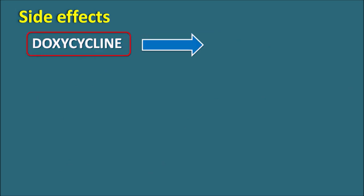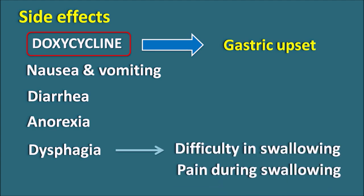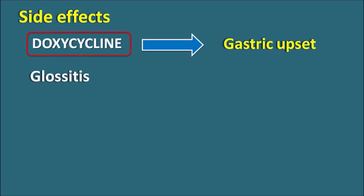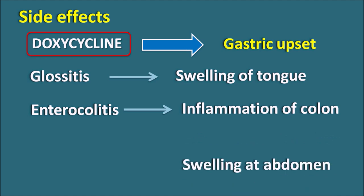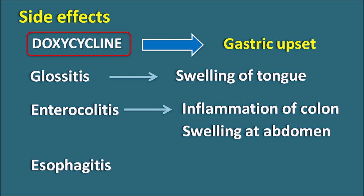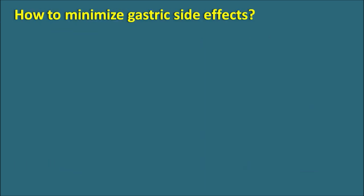One important set of side effects of doxycycline is gastrointestinal upset. This includes nausea, vomiting, diarrhea (which may be due to Clostridium difficile infection), and anorexia (loss of appetite). Doxycycline can also produce dysphagia — difficulty in swallowing with pain during the process. Other GI side effects include glossitis (inflammation and swelling of the tongue), enterocolitis (inflammation of the colon causing abdominal swelling), and esophagitis (irritation of the esophagus).